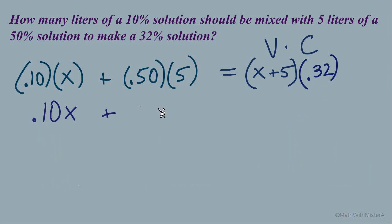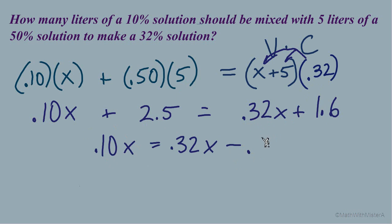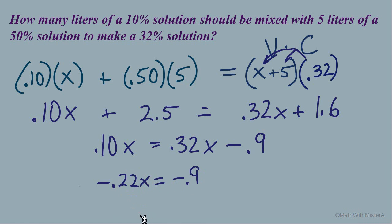Simplifying: 0.10x + 2.5 = 0.32x + 1.6, distributing 0.32 across (x + 5) to get 0.32x + 1.6. Solving for x, we subtract 2.5 from both sides and subtract 0.32x from each side to get the variable on the left: -0.22x = -0.9. Dividing both sides by -0.22 gives a decimal answer of approximately 4.0909 repeating, which we round to the nearest tenth: x ≈ 4.1 liters.